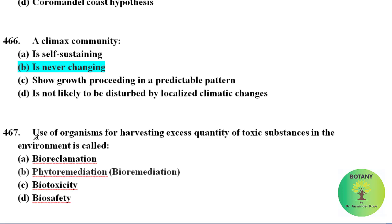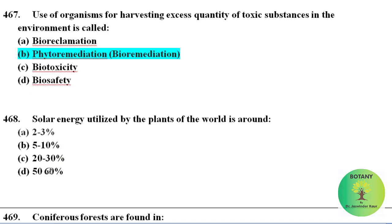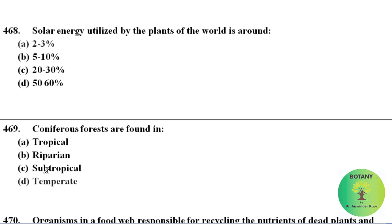Use of organisms for harvesting excess quantities of toxic substances in the environment is called phytoremediation or bioremediation. The solar energy utilized by plants of the world is only 2 to 3%.